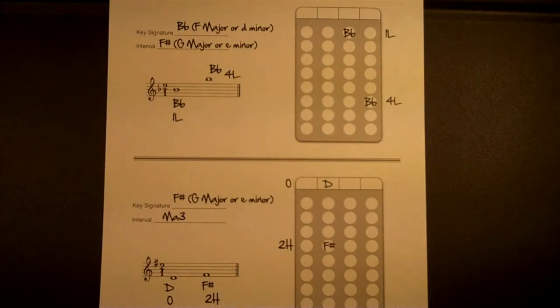Fifths, for example, sound like twinkle, twinkle. Perfect fifths, that is. Or Star Wars. You can use the names of songs to describe how an interval sounds to you.